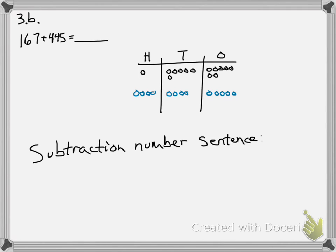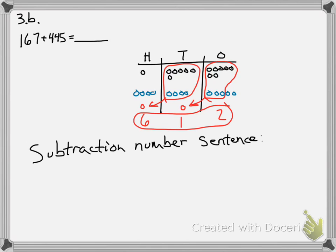This problem is pretty much identical to the last one. I've set up the place value chart to zip through it. In the ones: 7, 8, 9, 10 — bundle, leaving 2. In the tens: 6, 7, 8, 9, 10 — I have to bundle again, leaving 1 in the tens. In the hundreds I have 5 and 6. So I get 612.